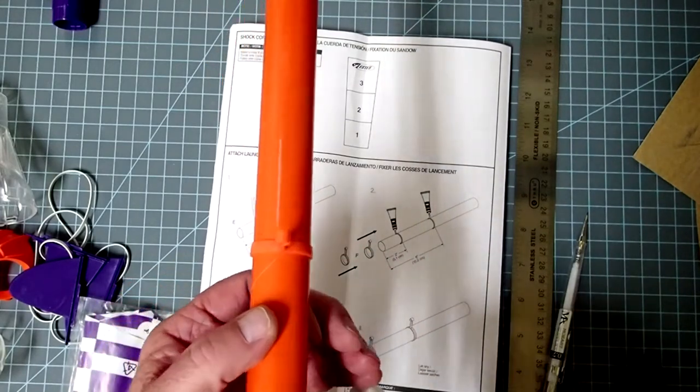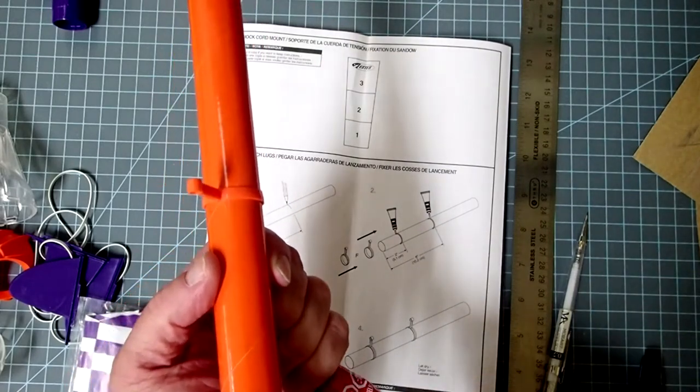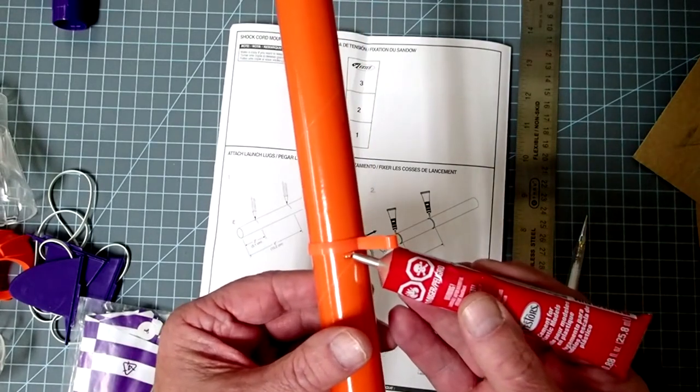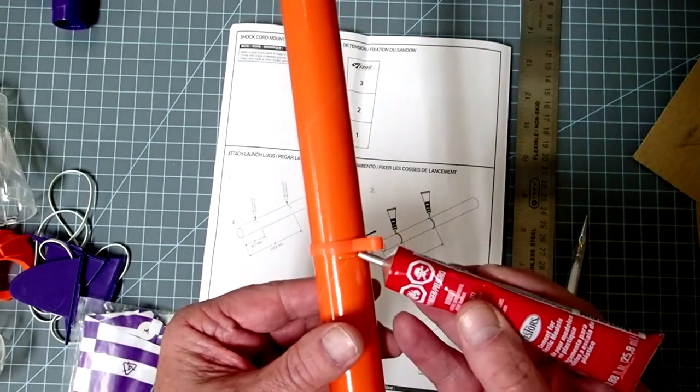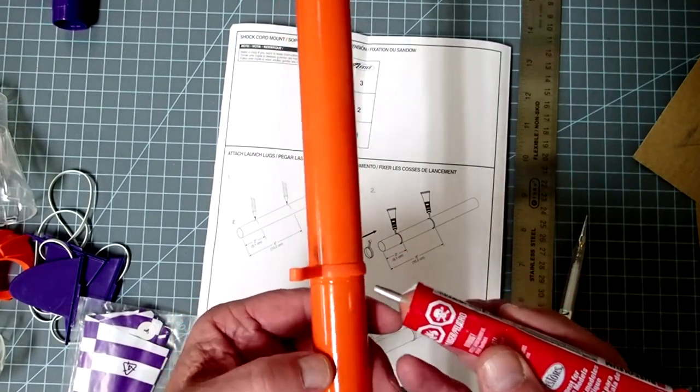Okay. So, for this part, you can use either the thick model glue, like this, or you can use the gel-type cyanoacrylate or superglue. Again, you don't need much here. My glue is actually coming out a lot faster than I'd prefer.